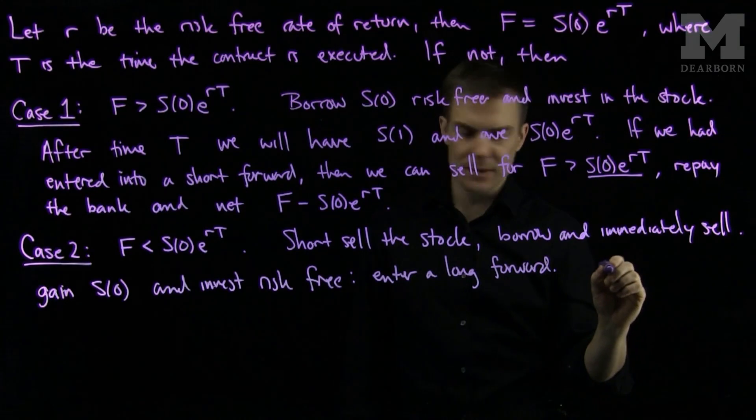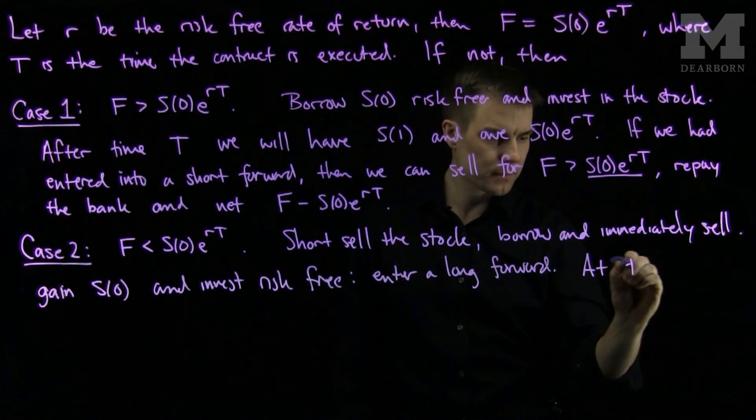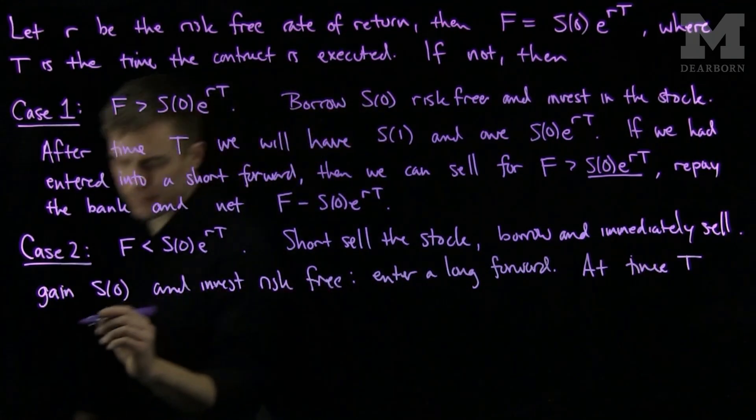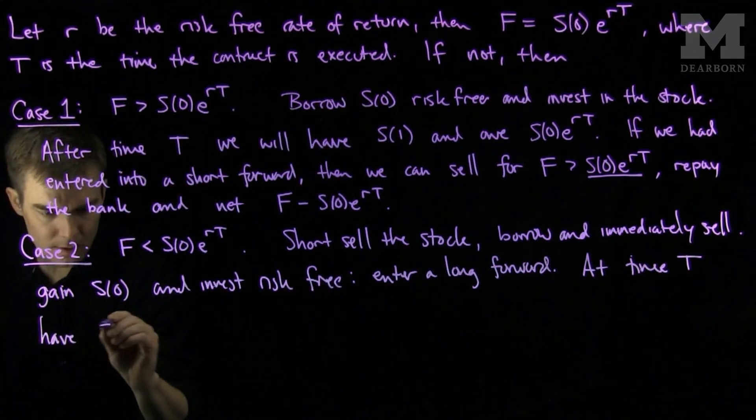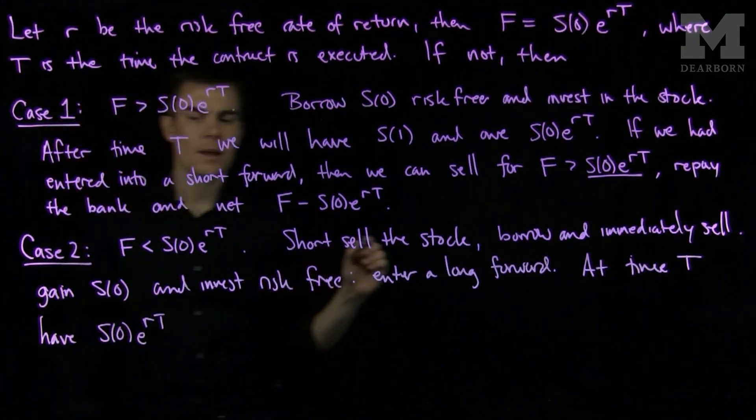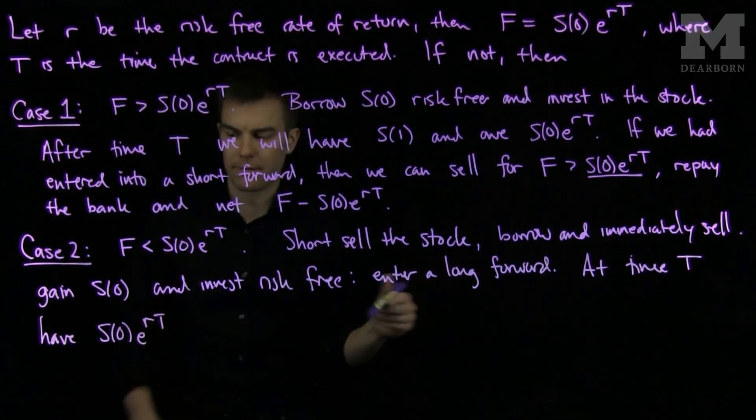Then, at time T, I will have S0 times e to the RT, and I will be obliged to buy the stock for F.